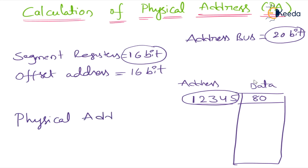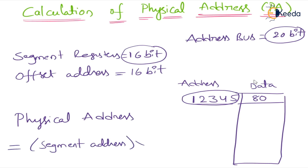So the physical address formula is: segment address multiplied by 10H, plus offset address. That is the formula for calculating the physical address.